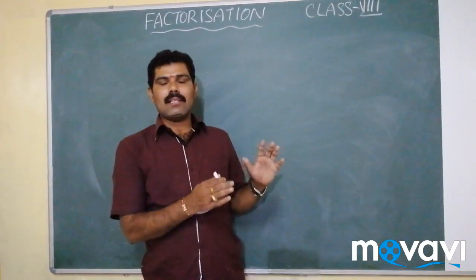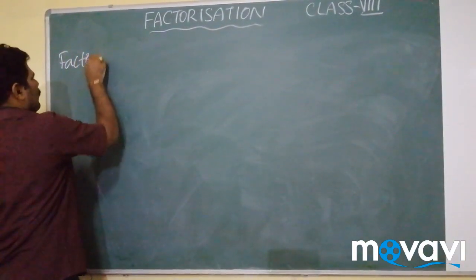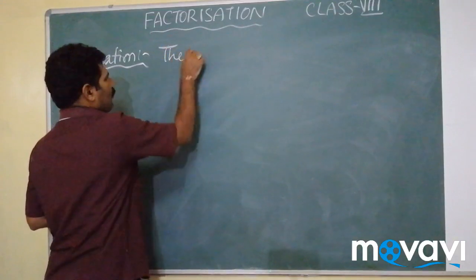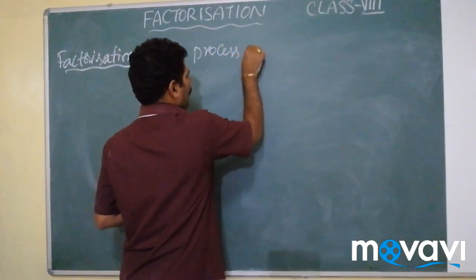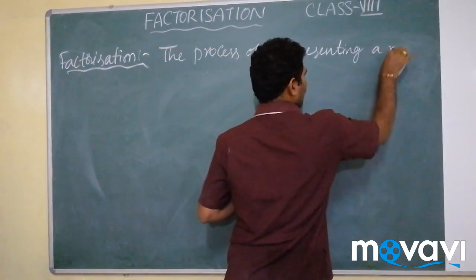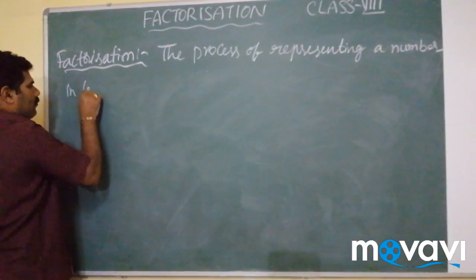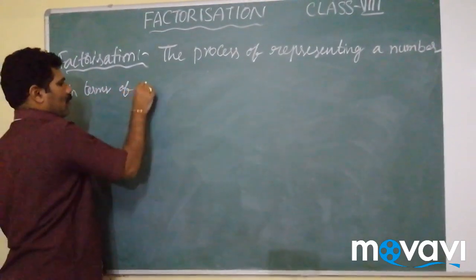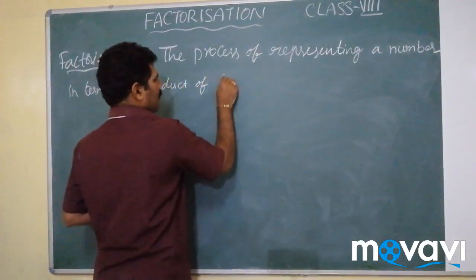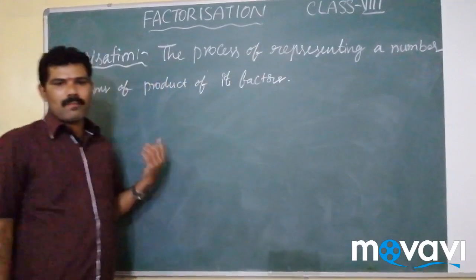Now let us see what exactly factorization is. Factorization is the process of representing a number in terms of the product of its factors.